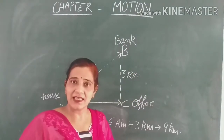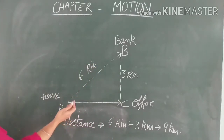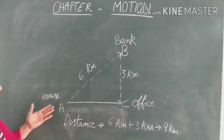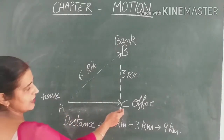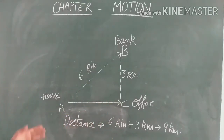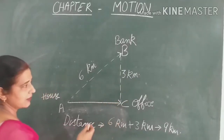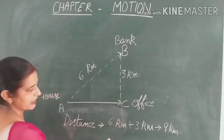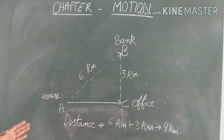Now with the help of a figure, we will understand how we can measure the distance. Here I have shown the path with dotted lines. Suppose a man is moving from his house at point A to the bank at point B, and after that he moves to his office at point C. The distance covered is 6 km plus 3 km, which gives us 9 km. So the distance covered by the man is 9 km.